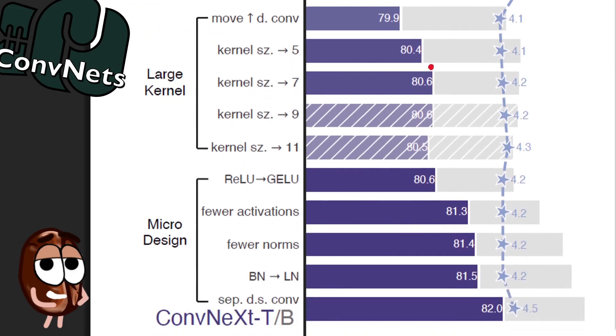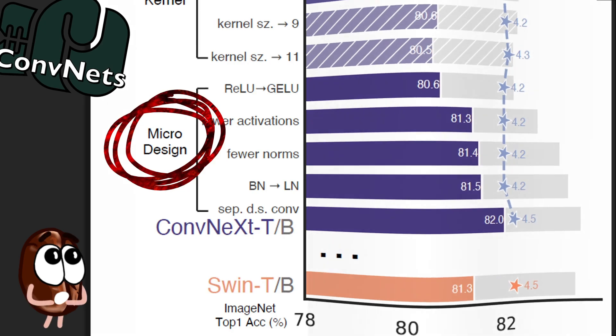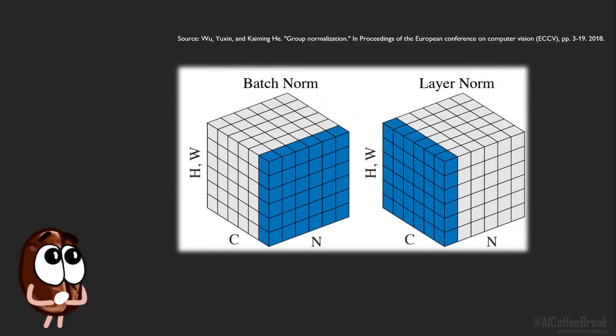And finally, the sixth and final stage comes with micro-design choices, such as replacing the Rectified Linear Unit activation function with the Gaussian Error Linear Unit used in BERT or GPT-2 or VIT. They are using the activation functions less often, as transformers also do, in the MLP block only. And with the same motivation to do everything more transformers-style, the authors also use fewer normalization layers, because transformers use them less often than the resnet as well. They are replacing batch normalization with layer normalization.